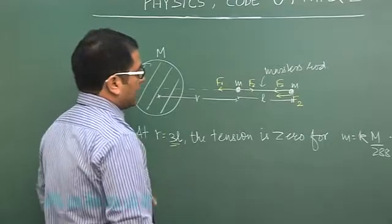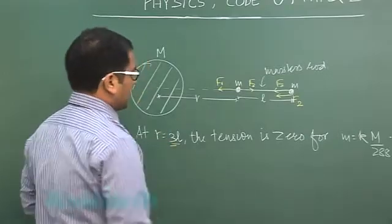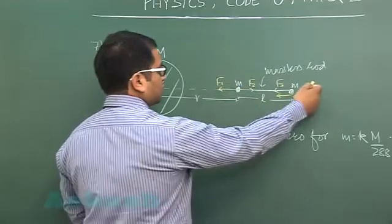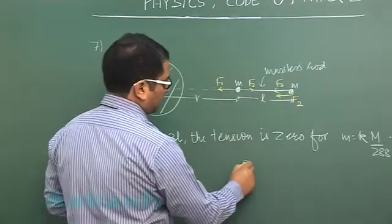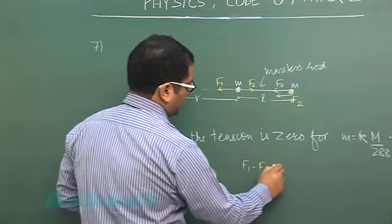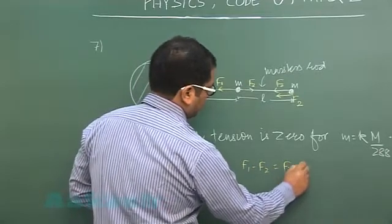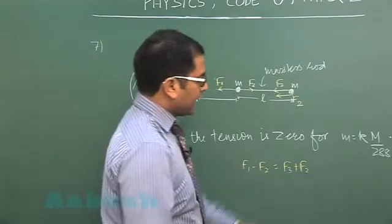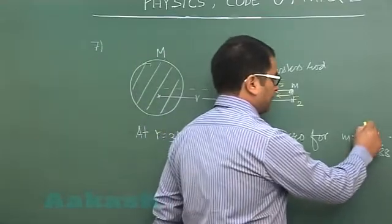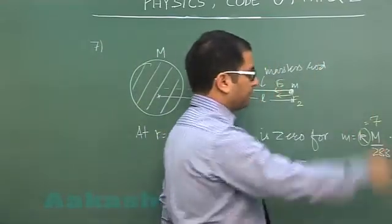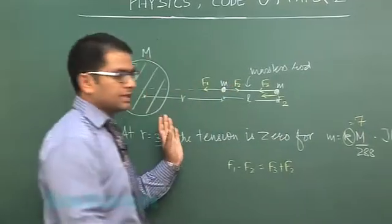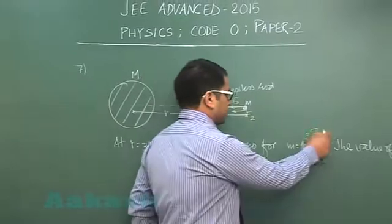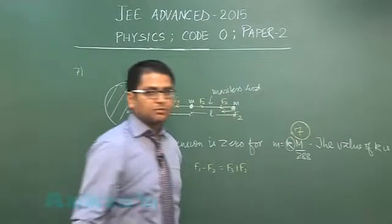And now if the tension has to be 0, so quite obviously the force on this side has to be equals to force on this side. In other words, F₁ minus F₂ has to be equals to F₃ plus F₂. Now you put the condition and eventually you land up with the value of k as 7. So this is quite a straightforward question, so therefore for question number seven the correct option for integer would be 7.